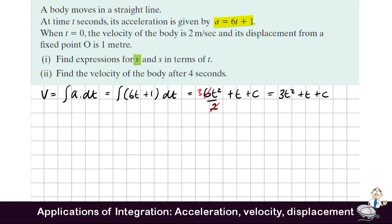Now we are given initial conditions, so we can evaluate what this c value is. We know that at time zero, the velocity is 2 meters per second. So if we let the velocity be 2 when we substitute zero into this equation, we see that c must be 2. So that gives v equals 3t squared plus t plus 2.